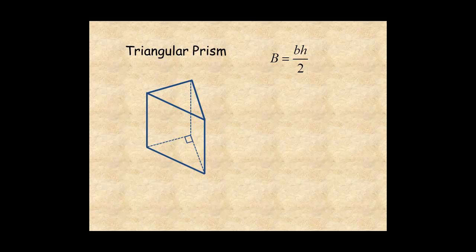For this example, the base is a right triangle. One of the legs is 10 meters long, and the other leg is 8 meters. For a right triangle, one of the legs is the base, and the other leg is the height. So the area of the triangular base is 10 times 8 divided by 2, which is 40 square meters.